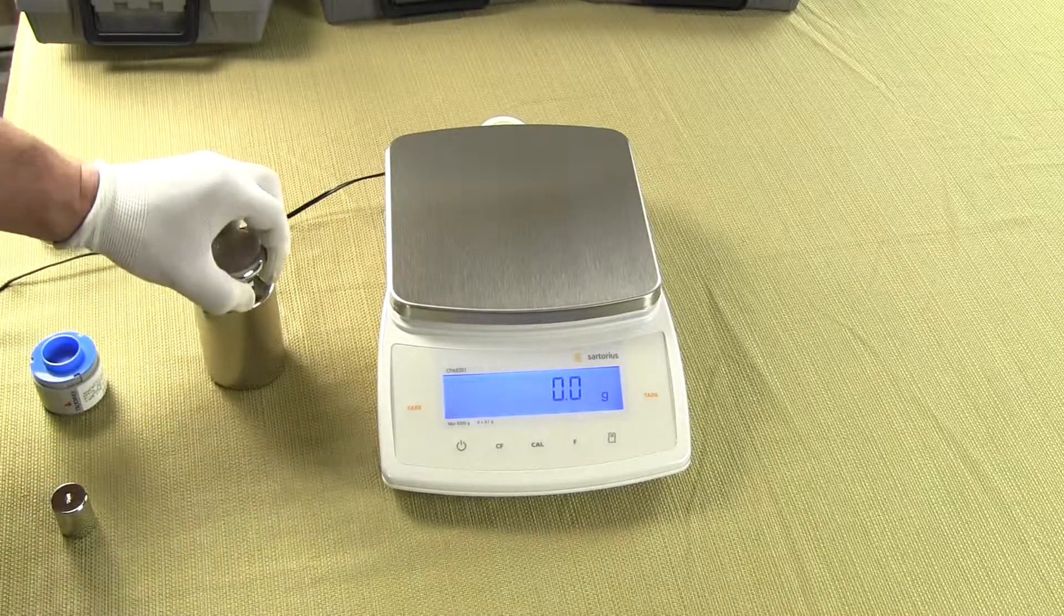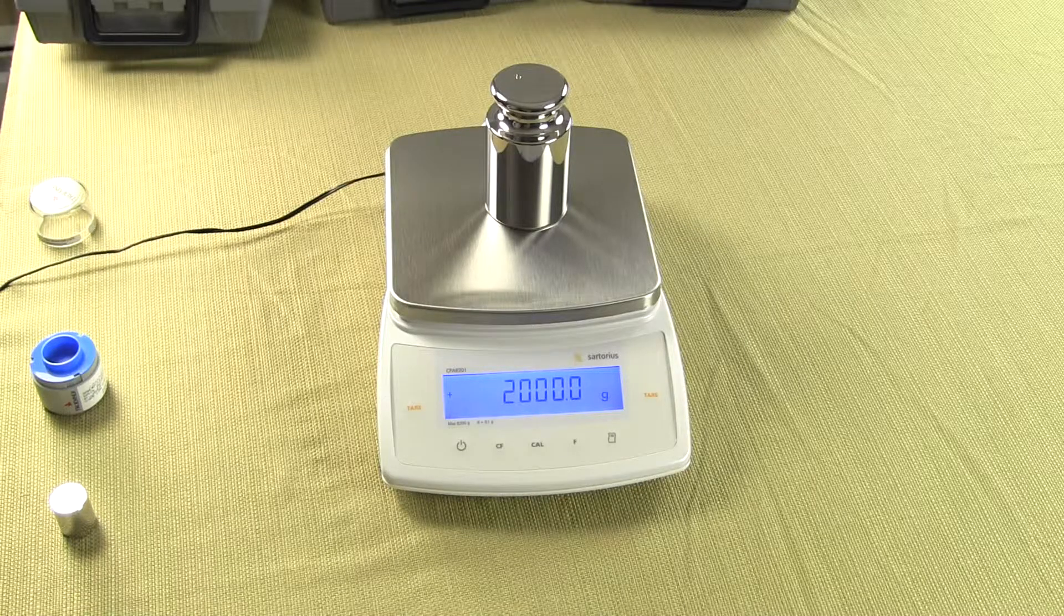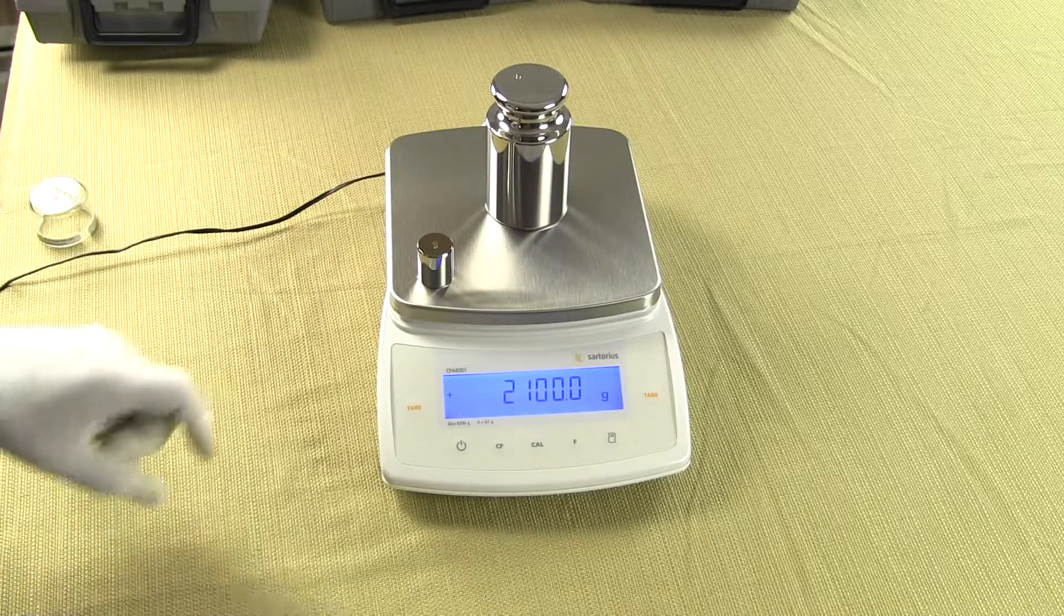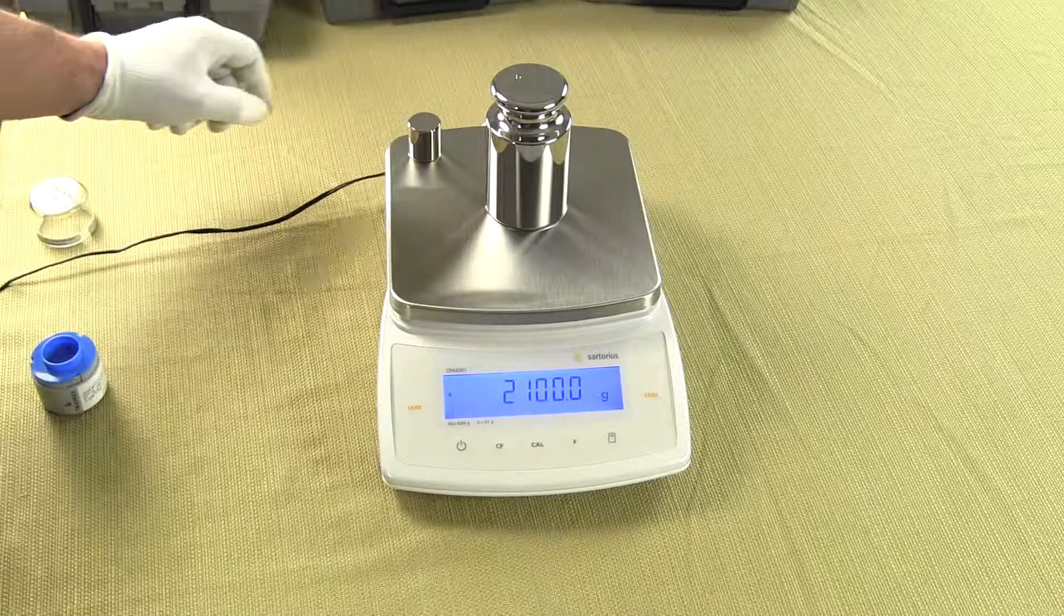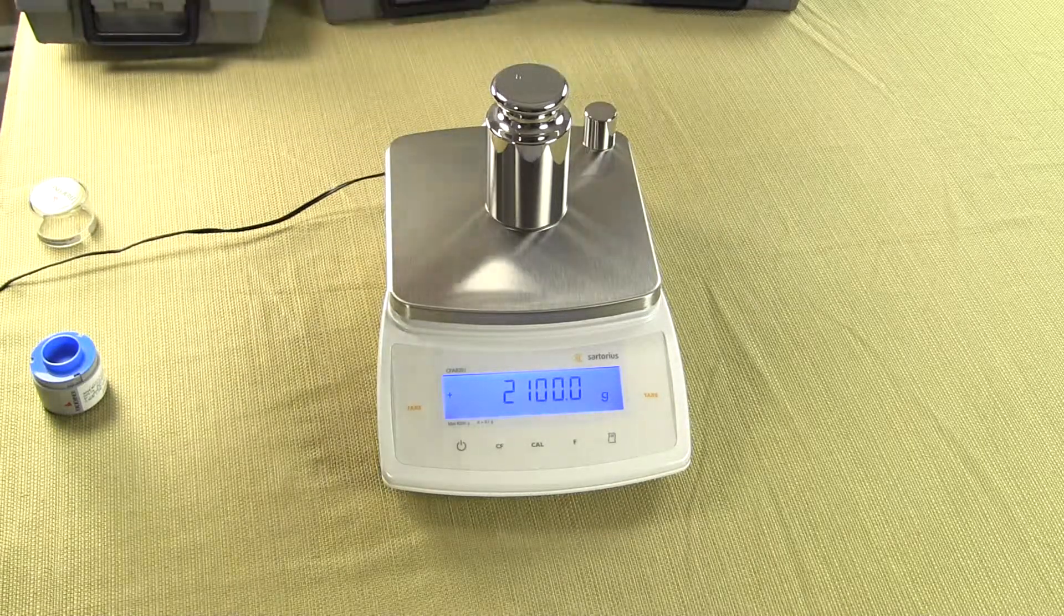Sartorius is top of the line. That's why they hold the Guinness book world record for the most accurate balance in the world and they have been building balances for over 140 years. So you can see when I put the weight in each corner how quick the balance responds and there's no drift.